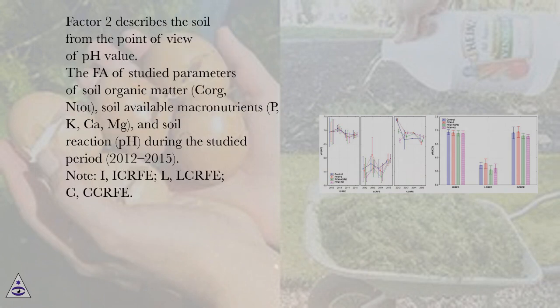Factor 2 describes the soil from the point of view of pH value. The FA analyzed studied parameters of soil organic matter (CORG, NTOT), soil-available macronutrients (P, K, Ca, Mg), and soil reaction (pH) during the studied period 2012-2015.